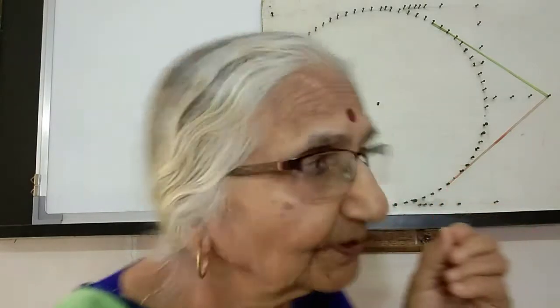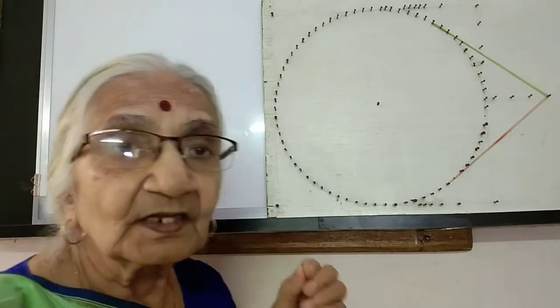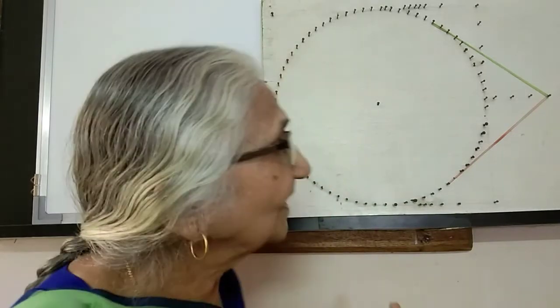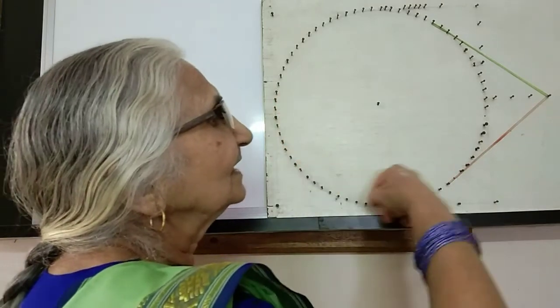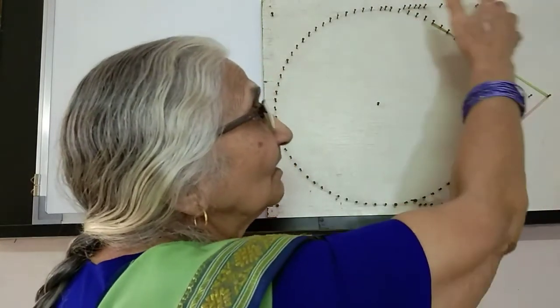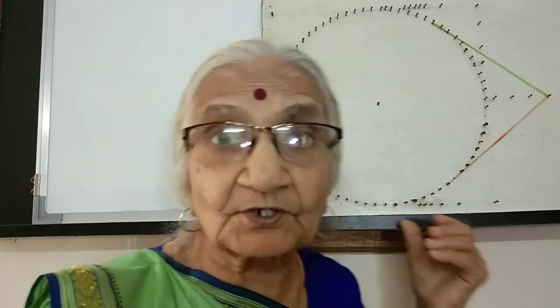Good day everyone. Today we plan to visualize some very simple properties of a circle. The model we are going to use is different in the sense that we have a board with small pins made into it. As you can see here, depending upon what you want to study, you have the board. Since we're going to talk about a circle, there are pins placed all the way along the circle equidistantly. This is called a geo board.